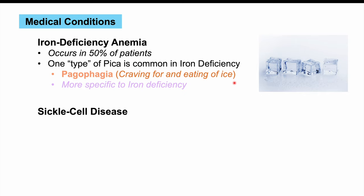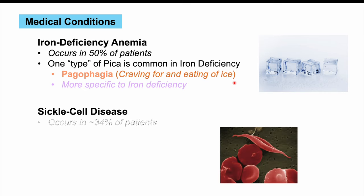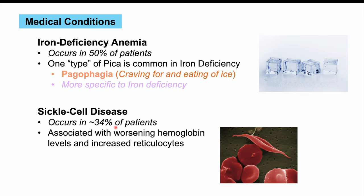Another medical condition associated with pica is sickle cell disease. Pica is estimated to affect approximately 34 percent of patients with sickle cell disease, and it seems related to worsening hemoglobin levels. In patients with sickle cell disease, lower hemoglobin levels and increased reticulocytes are associated with a higher frequency of pica-related behaviors.